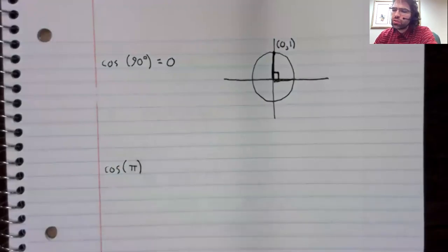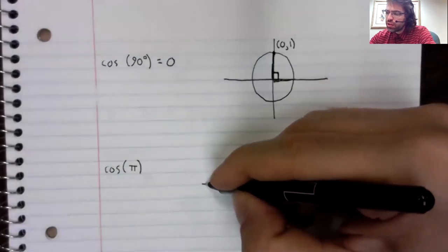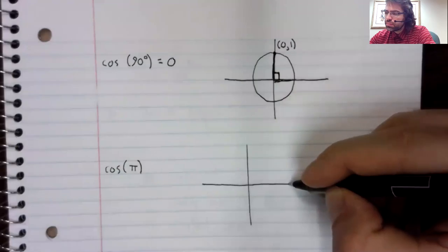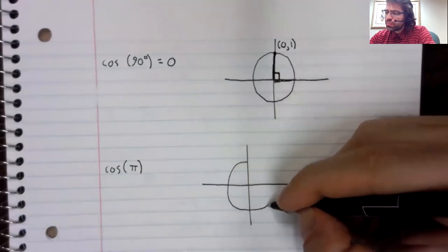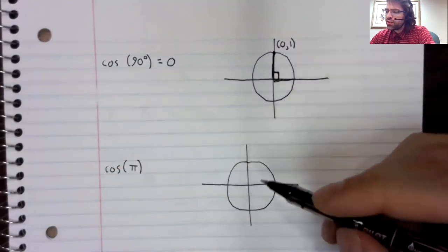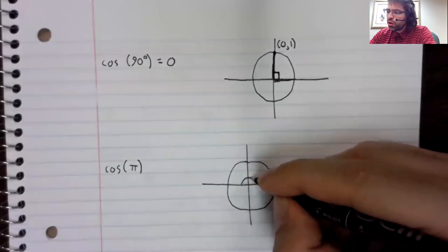Or we could talk about the cosine of pi radians. Remember that if you have an angle and you don't have a degree symbol, that means you're measuring in radians.